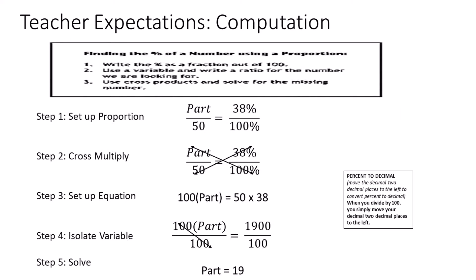Now let's do our computation and solve the problem. We set up a proportion with a missing part over 50, which equals 38 over 100. We cross multiply and end up with 100 times part equals 50 times 38. When we multiply 50 times 38 we end up with 1,900.